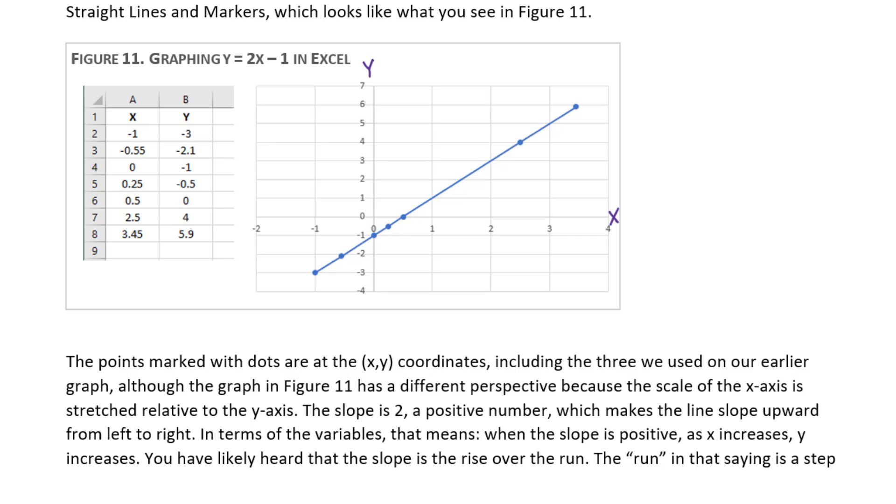In terms of the variables, what that means is that when the slope of a line is positive, as x increases, y increases. As x goes from negative 1 to 0, y goes from negative 3 to negative 1, which is an increase. As x goes from 0 to 1, y goes from negative 1 to 1, which is an increase. So mathematically, that's what a positive slope does.